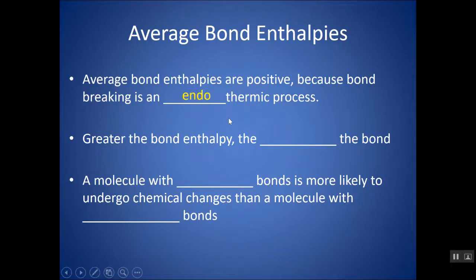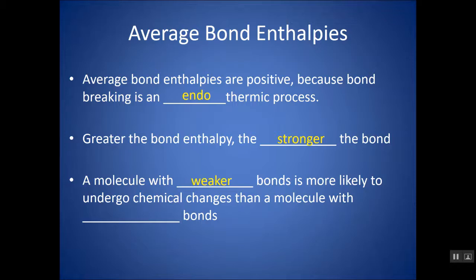Average bond enthalpies are positive because breaking a bond is endothermic. The greater the bond enthalpy, the stronger the bond. A molecule with weaker bonds is more likely to undergo chemical reactions because it requires less energy to break those bonds and typically has a lower activation energy.